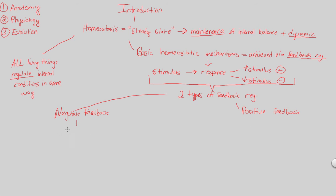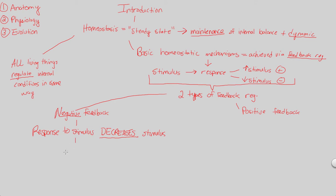What is negative feedback? Basically, negative feedback is when you have a response to a stimulus — the stimulus comes from the external environment — and that response actually decreases the original stimulus. That's why it's called negative feedback: the response to the stimulus decreases that original stimulus. Whatever it was originally, it gets decreased. I'll give you a common, easy-to-understand example: exercise.